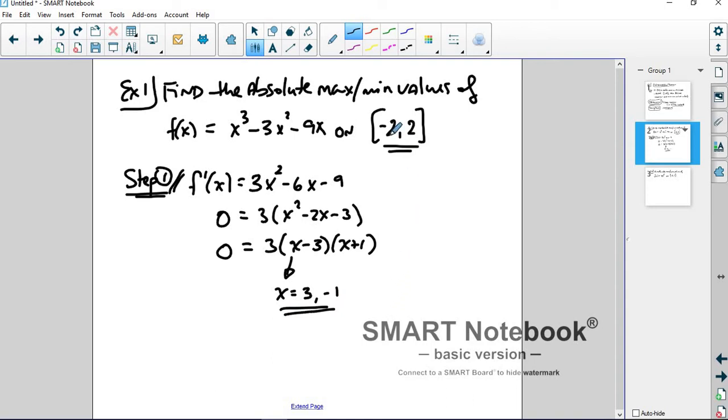So we have this closed interval from -2 to 2. And what that means is we are only interested in x's that are between -2 and 2 to find the max and min values. f may be bigger at 4, but we don't care because 4 is not in our interval.